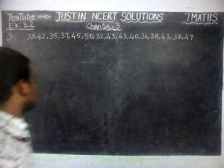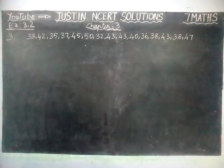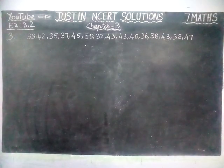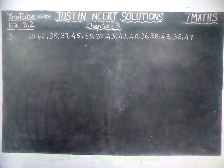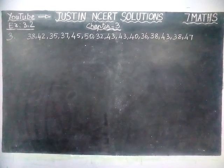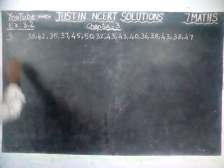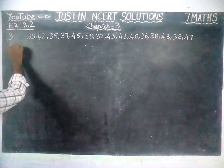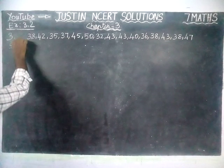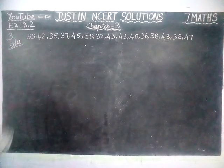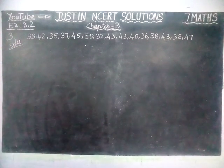And 47. Now, the first part asks us to find mode and median. After that, is there more than one mode? We are going to find it one by one. First, we are going to arrange the data in ascending order.